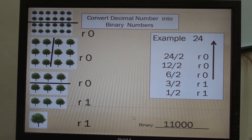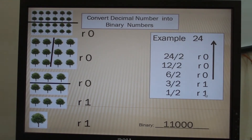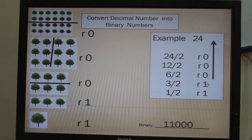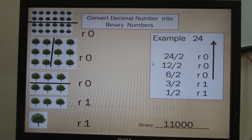Do not write the answer as 0.5. Instead, you will get the remainder 1. You will write the answers from the lowest to the highest, so it will be written 1, 1, 0, 0, 0. So the decimal number 24 converted into a binary number is 11000.